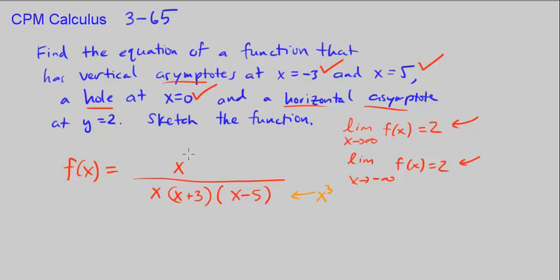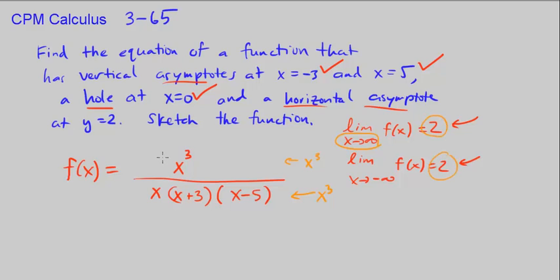So if we also have x cubed in the numerator — let's write that in red — then the limit as x approaches infinity of our function will be the ratio of the leading coefficients. If both leading coefficients are 1, we get 1 over 1. We want the limit to equal 2, so we put a coefficient of 2 in front of x cubed in the numerator.